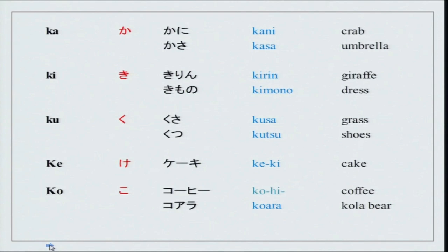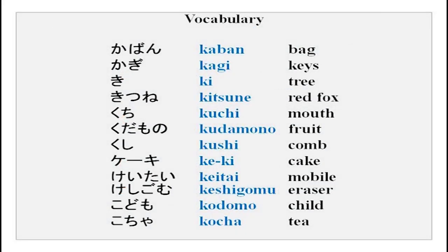More vocabulary for the k series: kaban, kagi, ki, kitsune, kuchi, kudamono, kushi, keiki, keitai, keshigomu, kodomo, kocha. The meanings are given in Roman script so you can read all of it and learn.